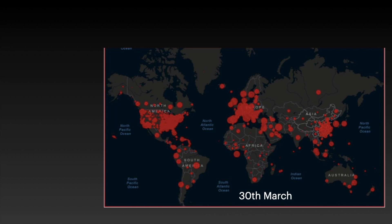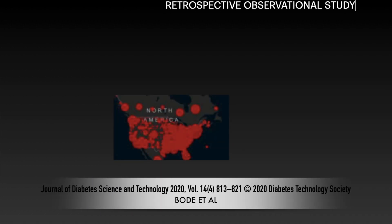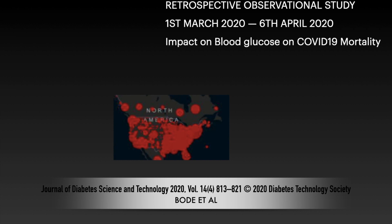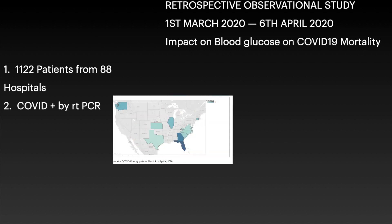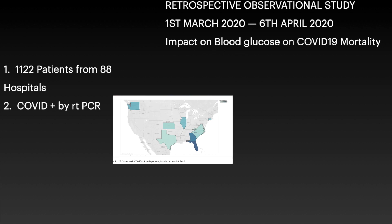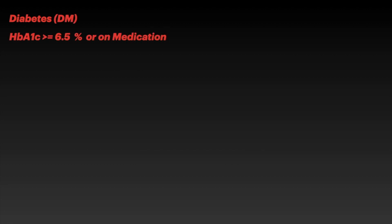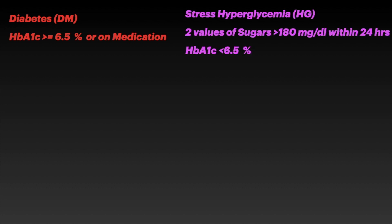This data is from a US retrospective observational study conducted from March 1st, 2020 to April 6th, 2020, looking into the impact of blood glucose on COVID-19 mortality. 1,122 patients were taken from 88 hospitals in the US, all confirmed positive by reverse transcriptase PCR. There were three groups: diabetic patients with HbA1c ≥6.5 or on diabetic medications; a stress hyperglycemia group with two blood sugar values >180 within 24 hours and HbA1c <6.5; and a third group of non-diabetic, non-stress hyperglycemia patients.